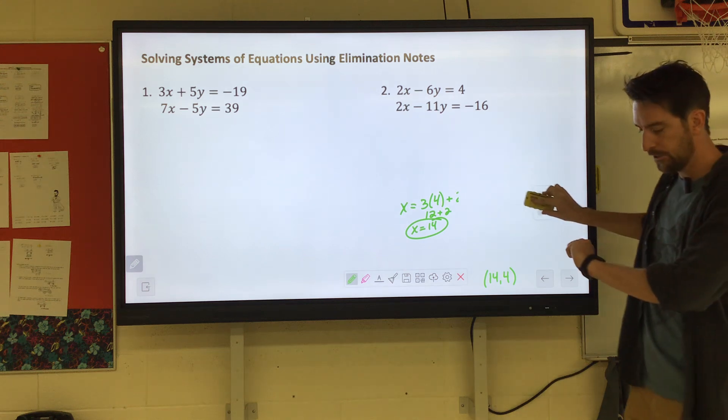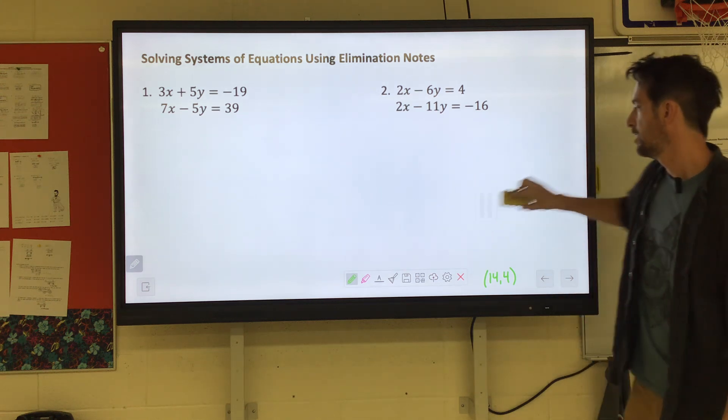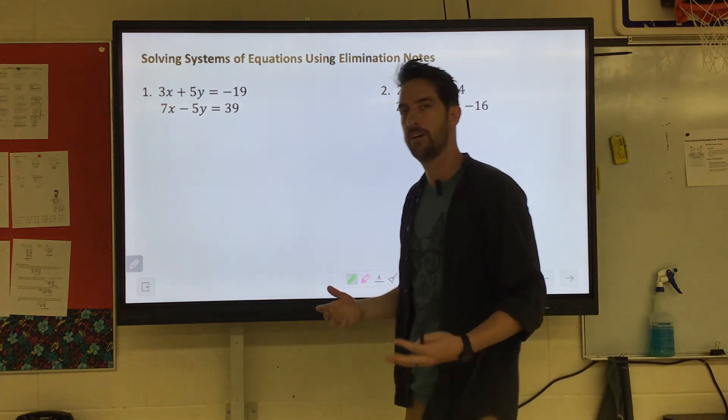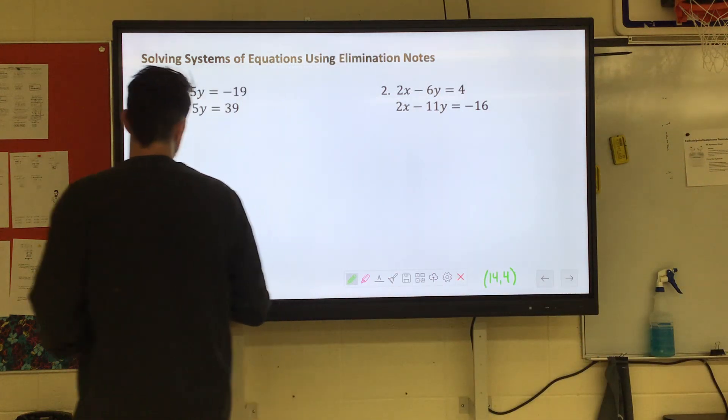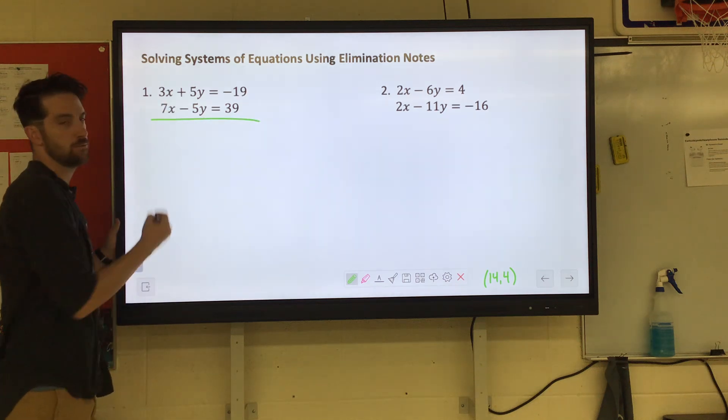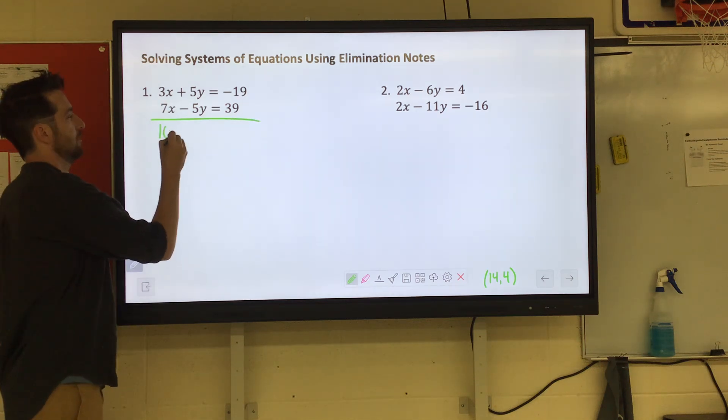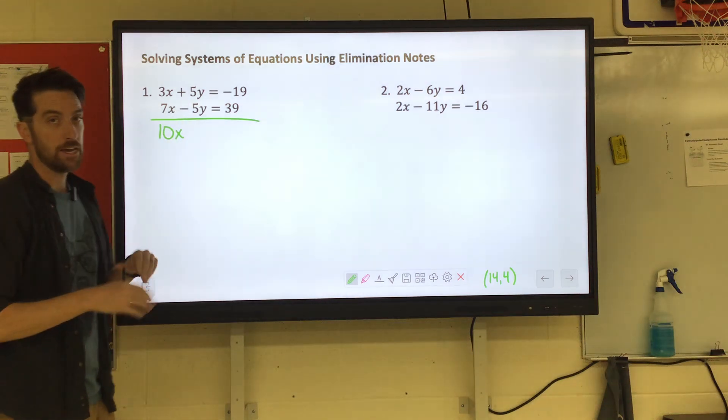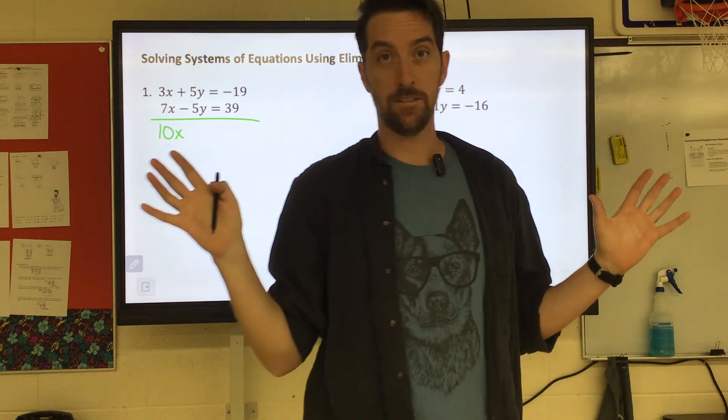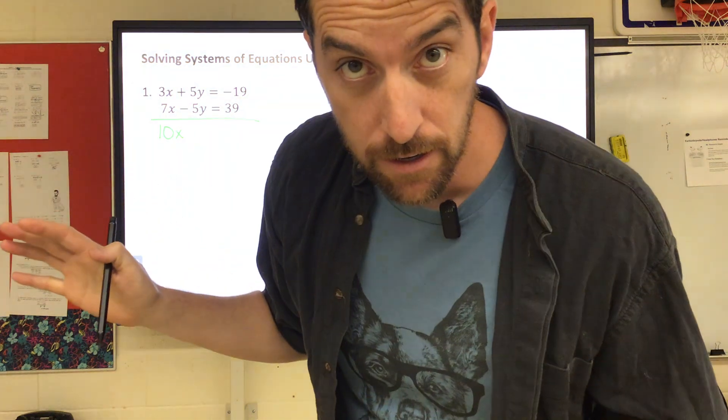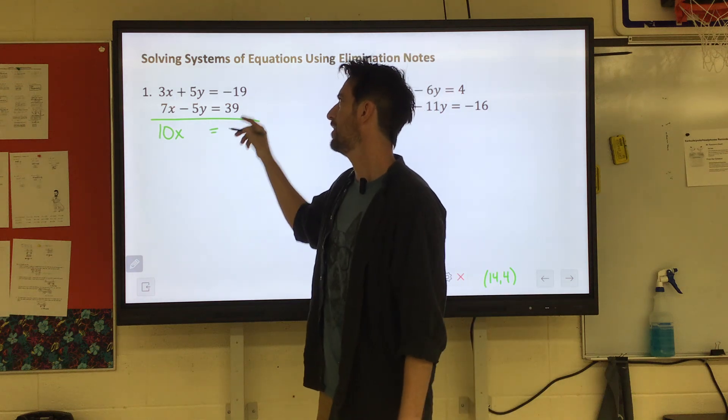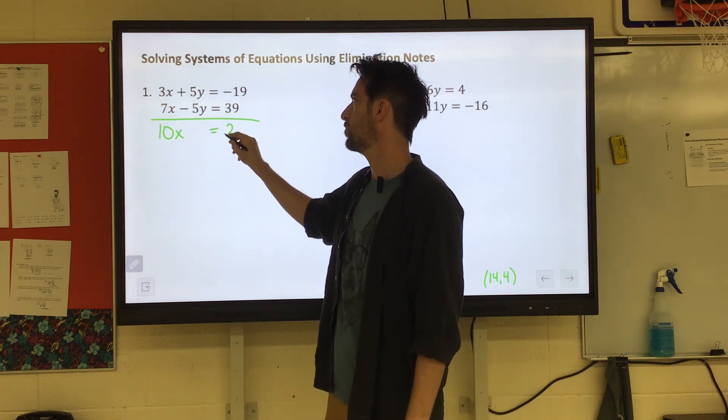This elimination is nice. If you look at example one we don't have to adjust everything. If we were to instead add straight down 3X plus 7X is 10X. 5Y plus negative 5Y is nothing. It's 0. It's almost as if the Y's have been eliminated. And then negative 19 plus 39 is 20.